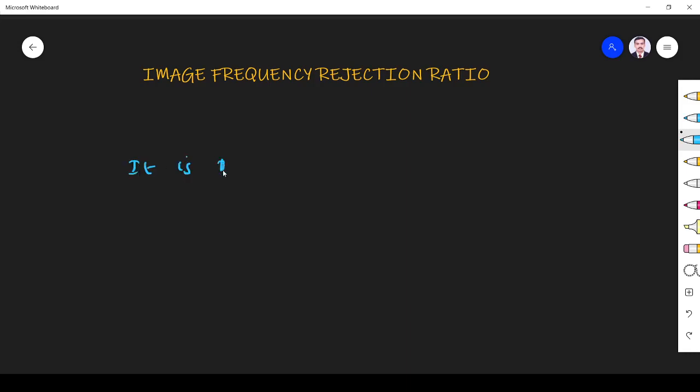Image frequency rejection ratio is the ratio of the gain at the signal frequency to the gain at the image frequency.